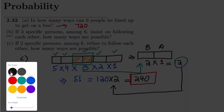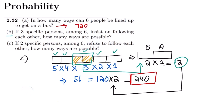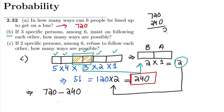Out of 720 total arrangements, 240 have the two specific persons following each other. Since we want the cases where they do NOT follow each other, we subtract: 720 − 240 = 480. Therefore, there are 480 total ways in which those two persons refuse to follow each other. This is the answer to Part C.